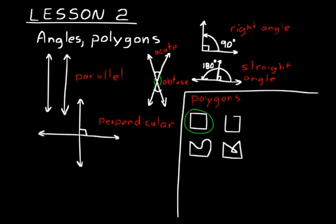It would be good to memorize all of those because you'll encounter them throughout the book. If you don't know what an octagon is and you have a problem about one in lesson 30, you'd have to come back to this lesson. So memorizing those will make your math a little bit easier.